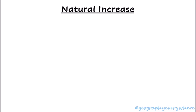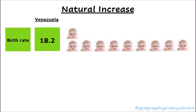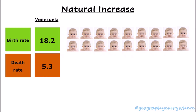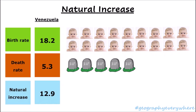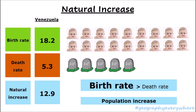Let's look in a bit more detail at Venezuela's numbers. Venezuela's birth rate was 18.2 — that means that for every 1,000 people, 18.2 children were born. The death rate in Venezuela was 5.3, meaning for every 1,000 people, 5.3 passed away. The natural increase is the difference between these two numbers, so the natural increase is 12.9. Venezuela has a very high birth rate and a lower death rate. If the birth rate in a country is higher than the death rate, the population is going to increase, because more babies are being born than people dying.